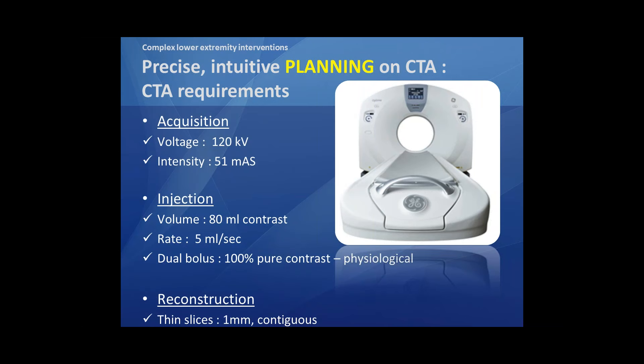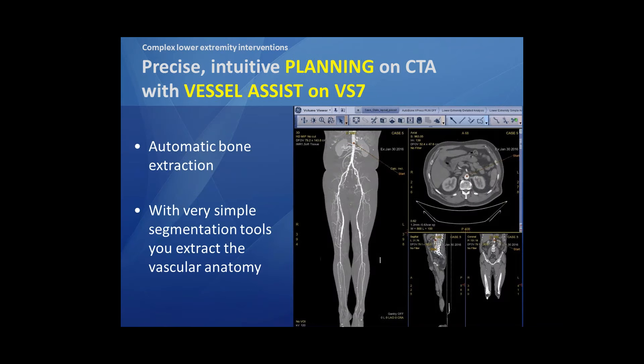They use a protocol with an acquisition voltage of 120 kilovolts and an intensity of 51 milliampere per second. They use an injector and inject 80 milliliters of contrast at a rate of 5 milliliters per second. They give a dual bolus — once 100% pure contrast of 80 milliliters, and afterwards flush again with 80 milliliters of physiological serum. The reconstruction is made with continuous thin slices of one millimeter. With these parameters you have the perfect CT angiography to start your preparation.